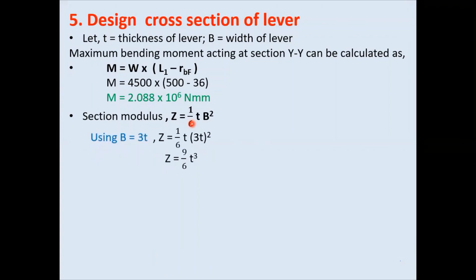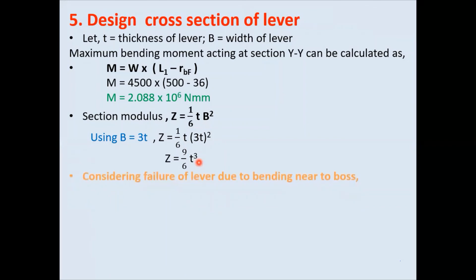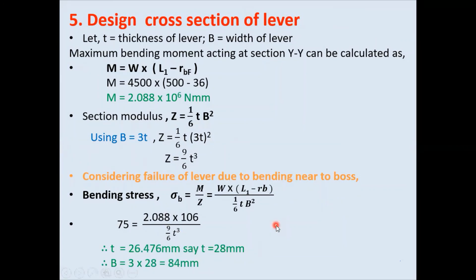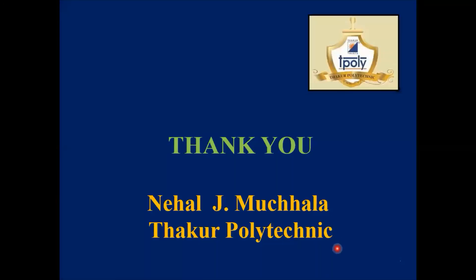Since no relation between b and t is given, assume b = 3t. So Z = (1/6) × t × (3t)² = 9t³/6. Using the bending stress equation σ_b = M/Z, substituting values of M, Z, and σ_b, the only unknown is t. We get t = 26.476 mm, say 28 mm, and b = 3 × 28 = 84 mm. The design of the bell crank lever is complete.